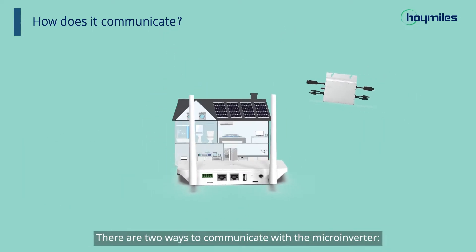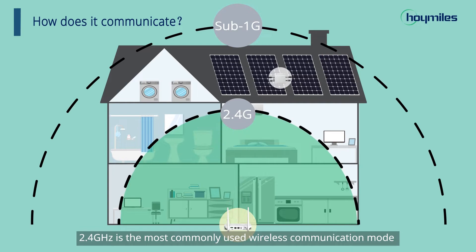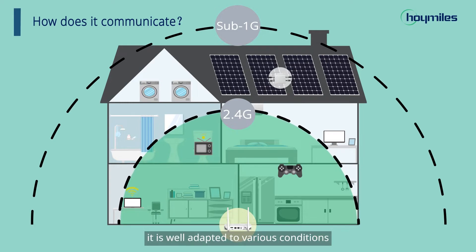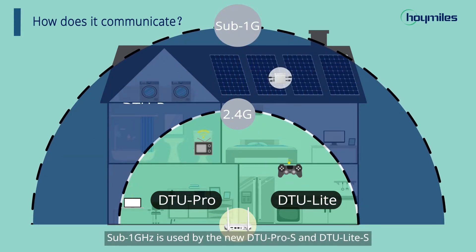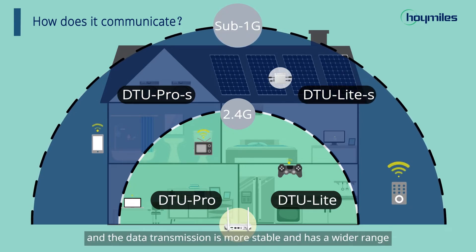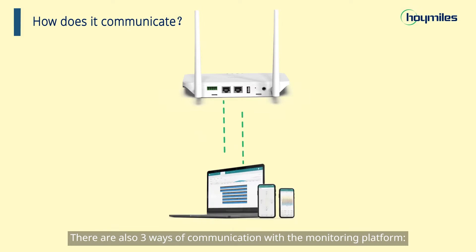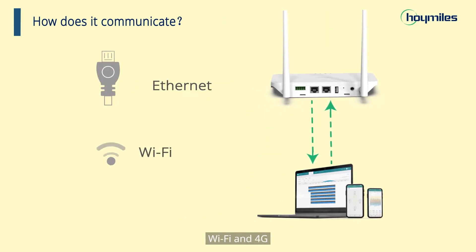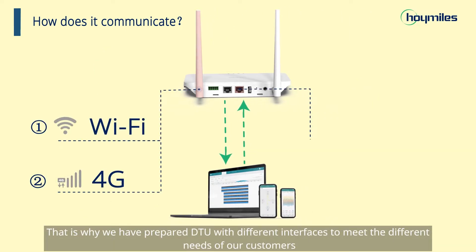There are two ways to communicate with the microinverter: 2.4GHz and Sub1G. 2.4GHz is the most commonly used wireless communication mode for home appliances, and it is well adapted to various conditions. Our DTU Pro and DTU Lite use this communication mode. Sub1G is used by the new DTU Pro S and DTU Lite S, and the data transmission is more stable and has a wider range. There are also three ways of communication with the monitoring platform: fixed network port, Wi-Fi, and 4G. That is why we have prepared DTU with different interfaces to meet the different needs of our customers.